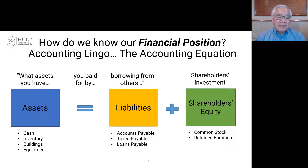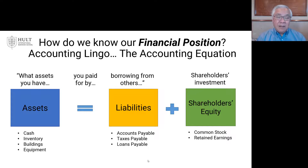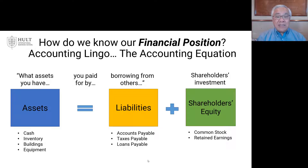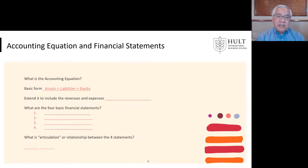Some examples of accounts: in assets, you see things like cash, inventory, or buildings and equipment. In liabilities, we see things like accounts payable — the amounts you owe to vendors — taxes payable to the IRS, and loans payable to the bank. In shareholders' equity, we have common stock sold to investors when you first issued shares, and over time, retained earnings, which is profit you've made minus the dividends paid out to shareholders. That's the accounting equation and examples of accounts inside those categories.